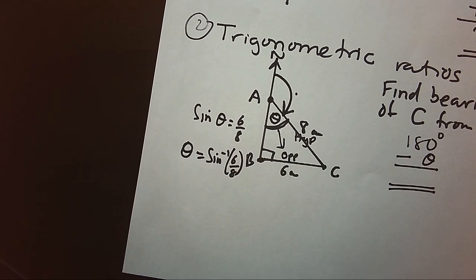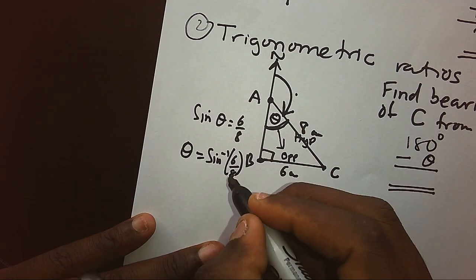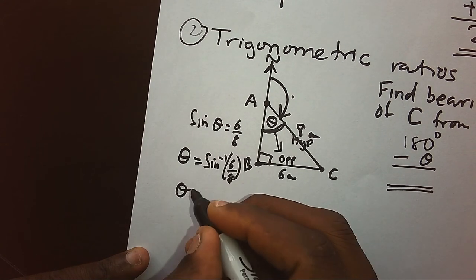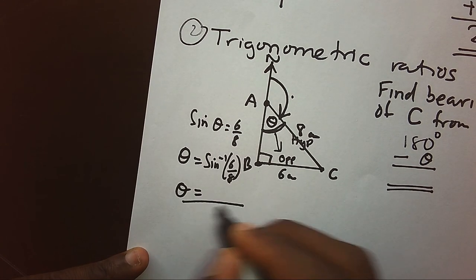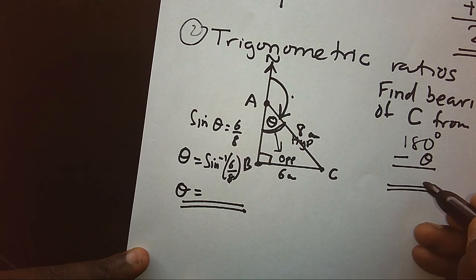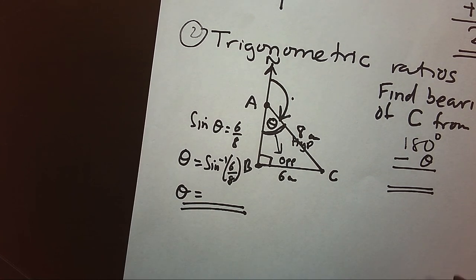Once I get the sine inverse of 6 over 8, I will be able to subtract it there. Using our calculator we can get sine of this, so once I get the sine I can subtract it. Now these are the ratios under which we can use to find bearing. Thank you for watching. If you enjoyed the discussion you can like and subscribe to my channel.